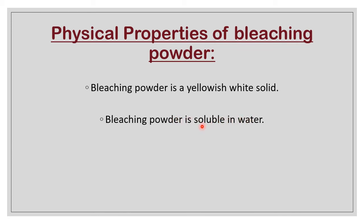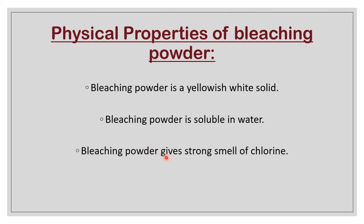We use bleaching powder in everyday life for purification, and it gives a strong smell of chlorine. Chlorine is yellowish-green in color, so commercial bleaching powder has a yellowish tint. If you go for pure, good-quality bleaching powder — which is a little more costly — it is white, but for normal day-to-day work we don't use that level of purified bleaching powder, so it appears slightly yellowish.